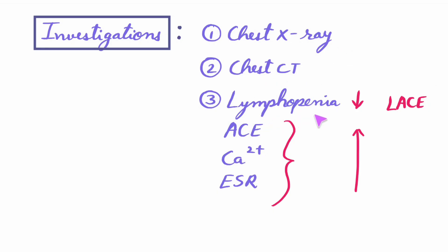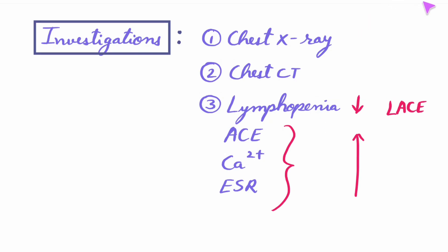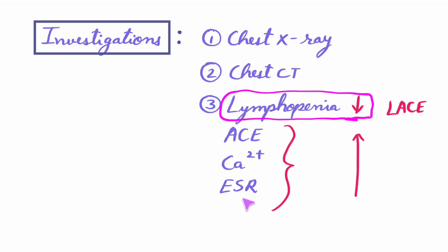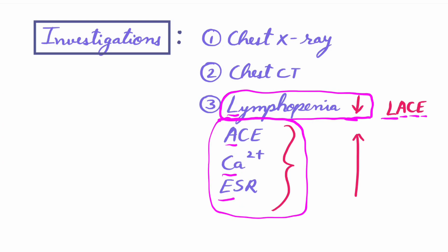Investigations include chest X-ray, chest CT, and lymphopenia — that is decreased lymphocytes. Angiotensin converting enzyme, calcium, and ESR are all increased. You can remember these by 'LACE': lymphopenia is decreased, while ACE, calcium, and ESR are increased.